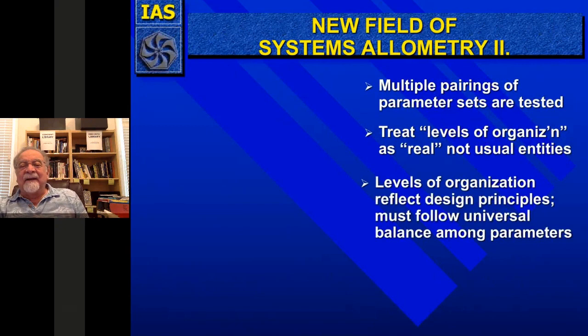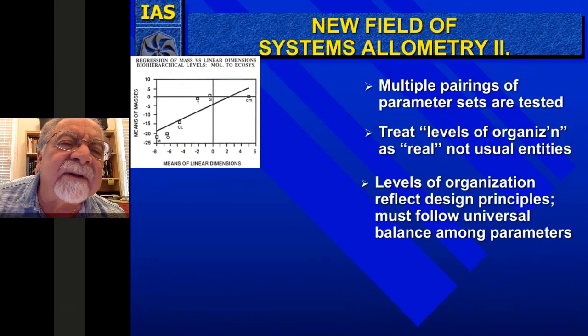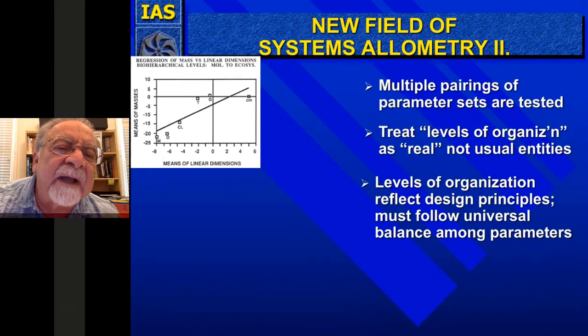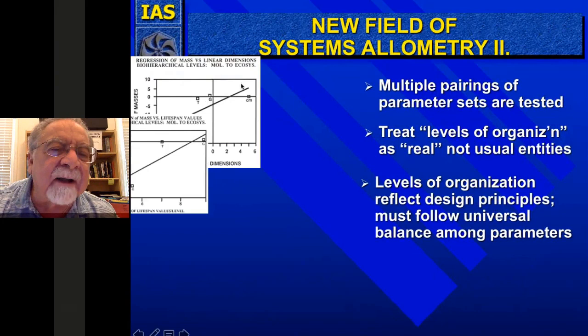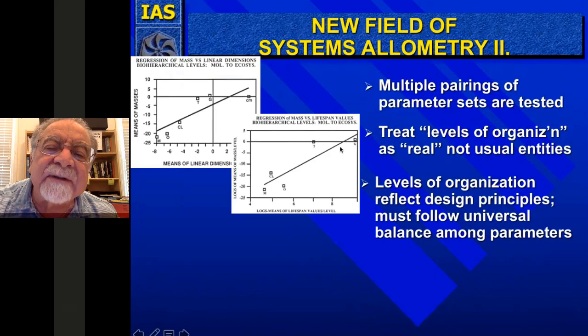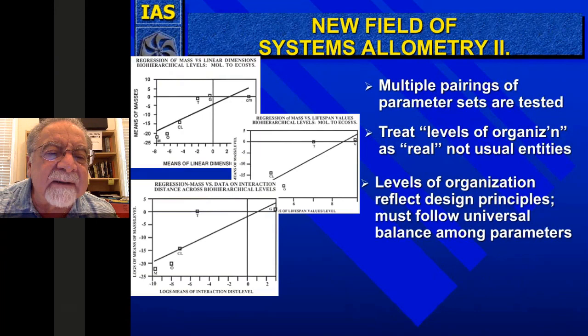Here's a regression of mass versus linear dimension for biohierarchical levels, molecules to ecosystems. Some might complain that tissues and organs are far away from this line, but it shows rather nicely a log line. And here are lifespan values from molecules to ecosystems — again showing a similarity. This is interaction distance across biohierarchical levels. You get the idea. And this one is developmental time versus interaction distance for those levels.